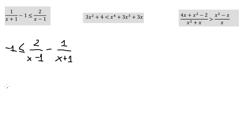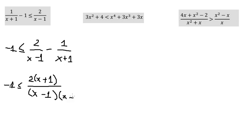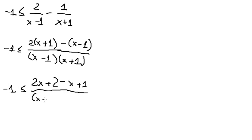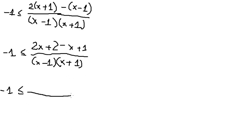Now we can do common denominator for this one. We multiply by s plus one, and this one we need to multiply by s minus one — and we have a negative sign here. So we have two s plus two minus s plus one, all over s minus one times s plus one. This gives us two s minus s, so we get s, and two plus one is three.